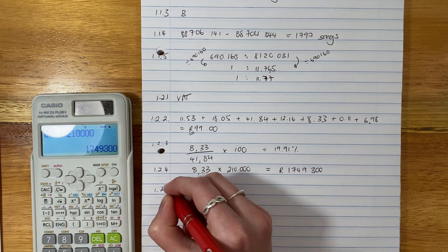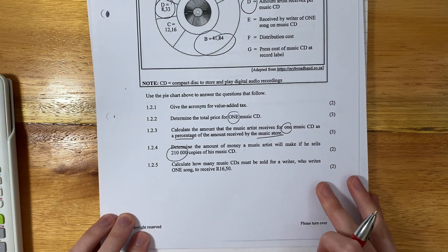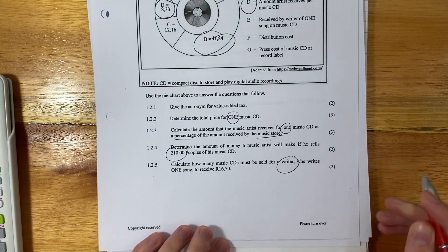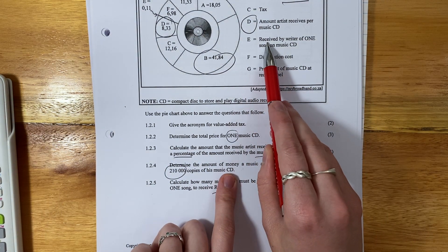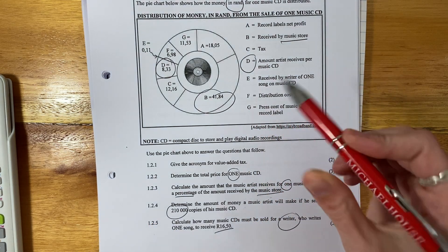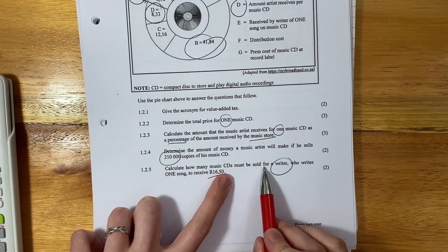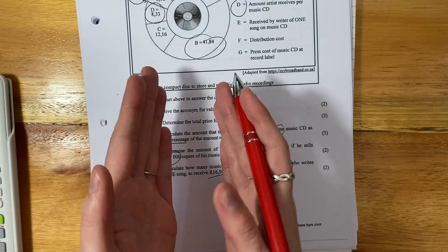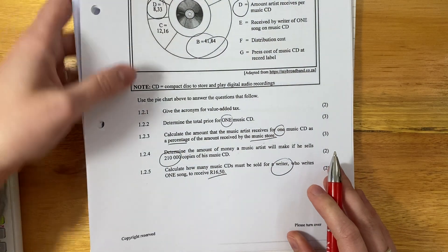This is quite an intricate question in that it's asking a variety of different things. Last question here. It says, calculate how many music CDs must be sold for a writer who writes one song to receive 16 rand 50. Now, over here it says, received E is received by a writer of one song on the music CD. So there's E. So this question said, calculate how many music CDs must be sold for a writer who writes one song. So on the album, they've only written one song. So they only get 0.11 for each album that has been sold. And then we want to know how many CDs have to be sold for them to make 16 rand 50. It's not a lot of money.